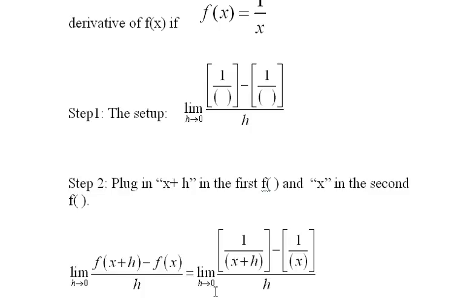It turns out that if I plug in 0 for h, I still have 0 over 0. But I might be able to simplify this a little bit, and that's what I'm going to do.